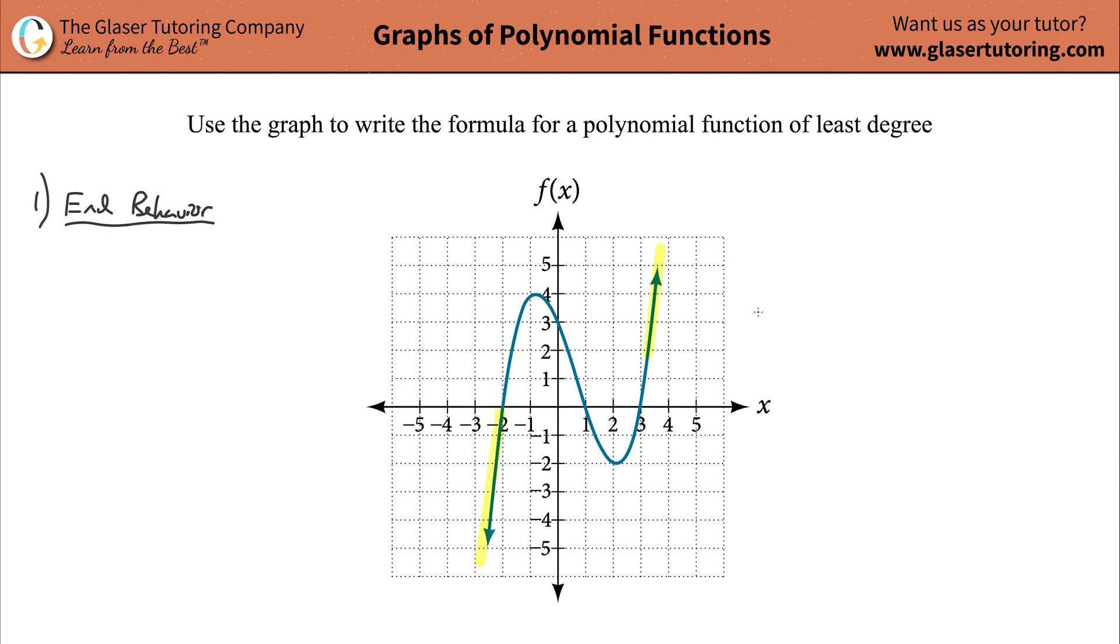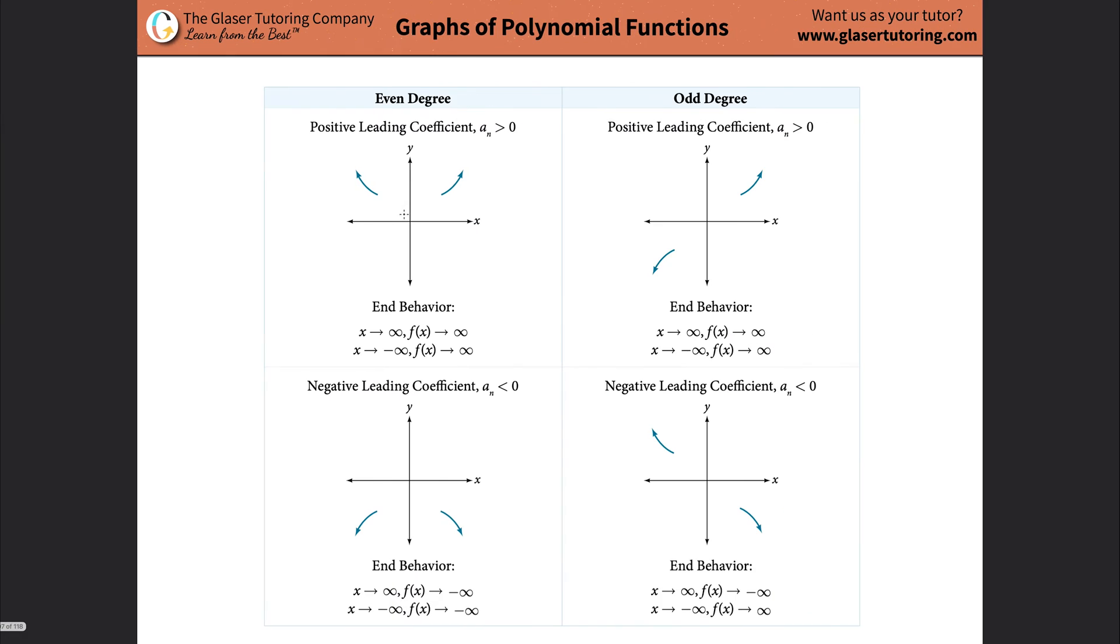So whenever you have a graph going on and on and on forever down into quadrant three and up into quadrant one, what it tells you is that you're going to have an odd overall degree. Now what you can do is you can memorize these little facts if you like. What my graph shows is it shows this kind of end behavior where it goes on and on and on forever in the third quadrant downward and on and on forever upward in the first quadrant. That's going to tell me that I have an odd degree, the highest degree that is.